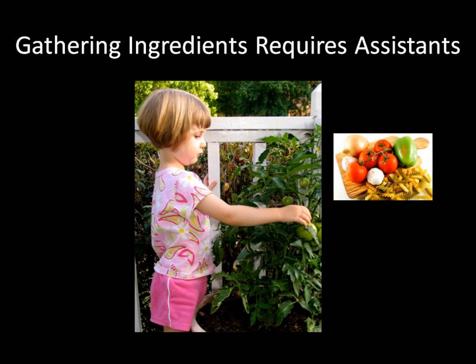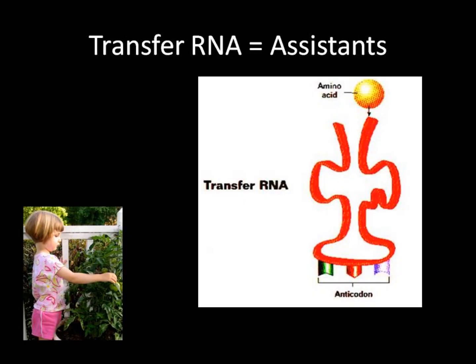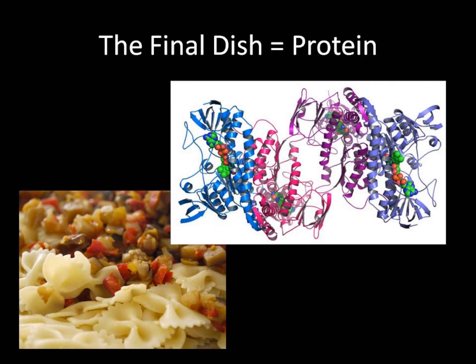Just as a family recipe may require the help of other family members to collect the ingredients, our cells need assistance too. The assistant for protein synthesis is called transfer RNA. This is a molecule that carries the ingredients of protein synthesis, the amino acids. Just as a child may carry ingredients to a parent to help follow a recipe, transfer RNA carries specific amino acids needed to build the protein. Once all of the directions have been followed, we finally get our final product from the recipe. For protein synthesis, that final product is an actual protein, made of many amino acids, combined together in a specific shape.